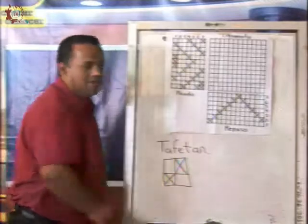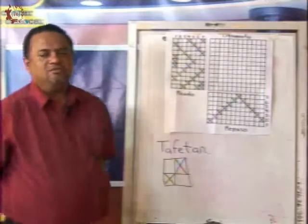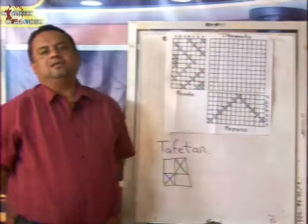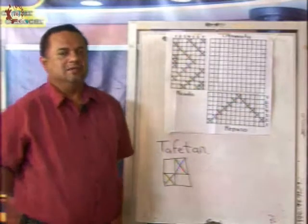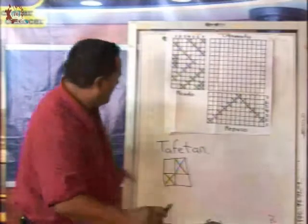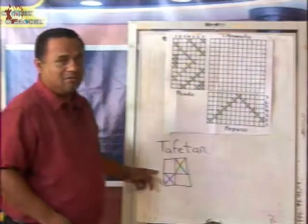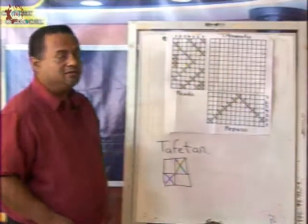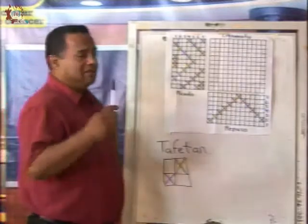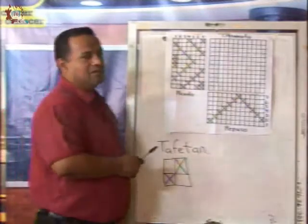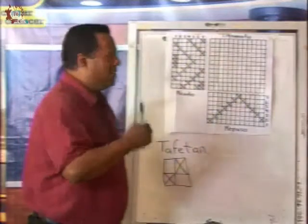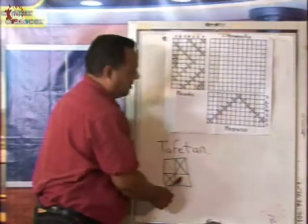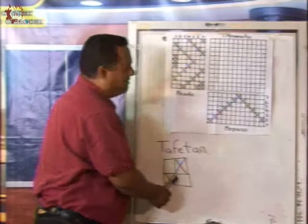Este es el ligamento más sencillo. Otro de los ligamentos fundamentales es la sarga, y el tercero sería el satín. Entonces, ¿para qué vimos en clase estos ligamentos fundamentales? Para poder nosotros desarrollar nuestros diseños. ¿Qué necesitamos para realizar un diseño en tela o diseñar una tela? Necesitamos el ligamento. Este es el más sencillo: el tafetán.